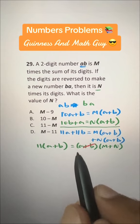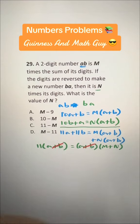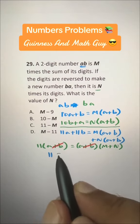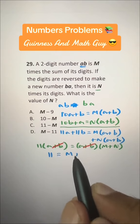We can cross out these A plus B and A plus B here. Then we have 11 is equal to M plus N.